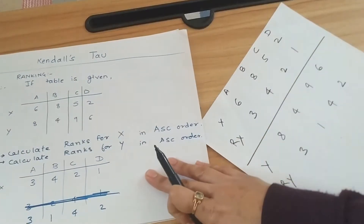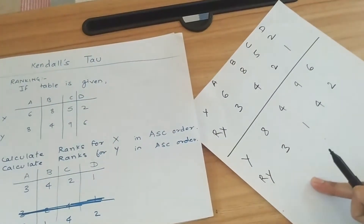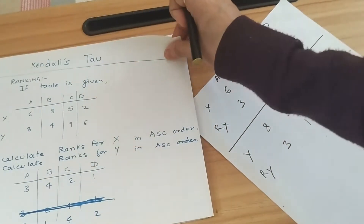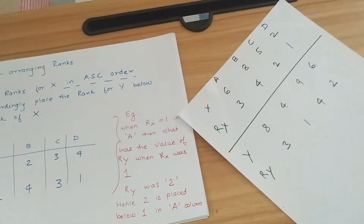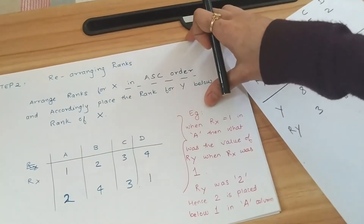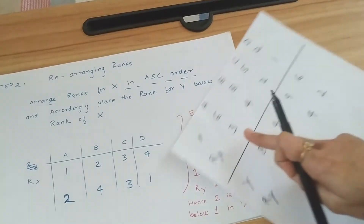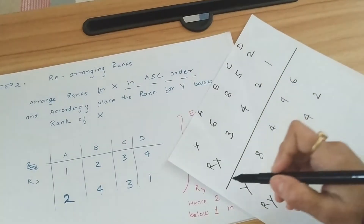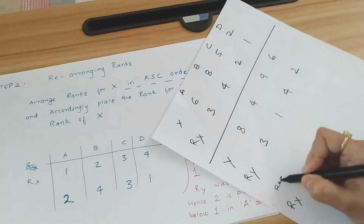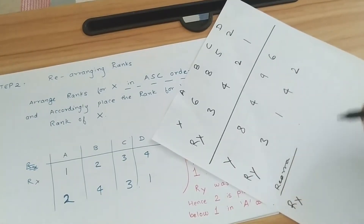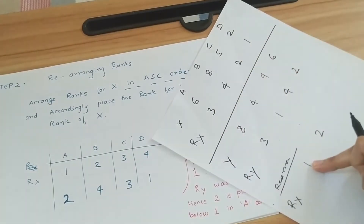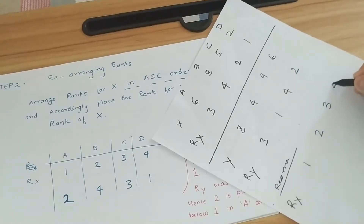So we have both arrangements — this is Rx and Ry. We are done with the ranking. The second step is to rearrange the ranks. X should go in ascending order: 1, 2, 3, and 4.